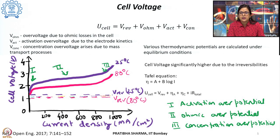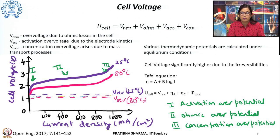The various thermodynamic potentials are calculated under equilibrium conditions with no irreversibilities. In actual practice the cell voltage required is sufficiently higher because of various irreversibilities. These are arising because of resistances of different components, activation overvoltage, and ohmic overvoltage, and this overvoltage can be related to current density using the Tafel equation: overvoltage equals a plus b log i, where a and b are characteristics of the anode and cathode, and i is the current density.